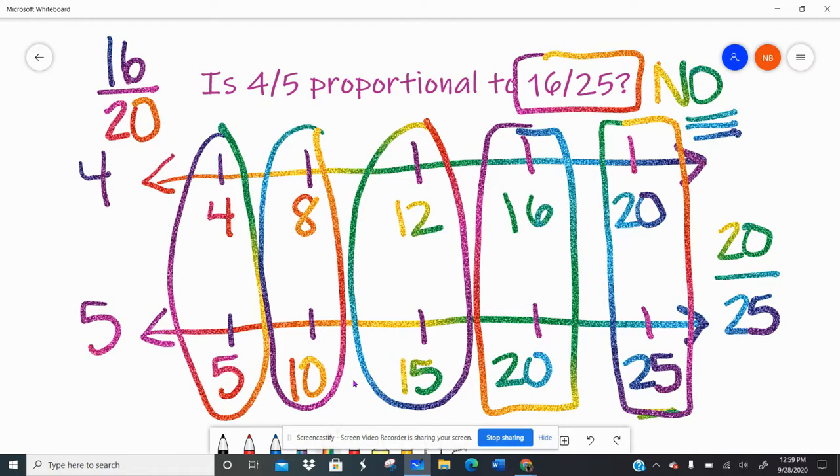So you can use double number lines for a lot of reasons and they can be super handy, especially when you get to those choose all options. Let me know if you have any questions. Love ya. Bye.